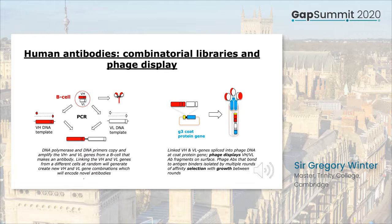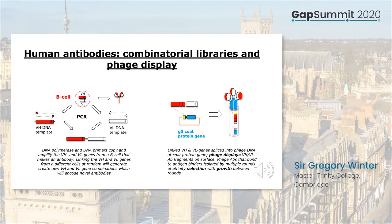It's possible to get very high enrichment factors by multiple rounds of selection. You infect bacteria, let them grow up, take the phage from those bacteria and undertake selection — some fraction of the selected phage will be binding to the target antigen. You use those to infect further bacteria, grow up more phage, and enrich in the same way, finding very rare binders among the many phage that don't bind.